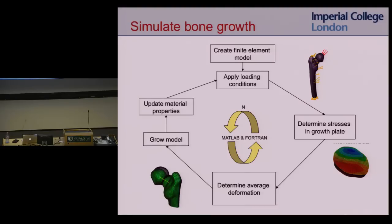We can determine which part is promoted, which part is inhibited. We determine the direction of deformation, because that's going to tell us which direction the bone is growing. And then we grow the model, update the material properties, and simulate growth in a finite element model.